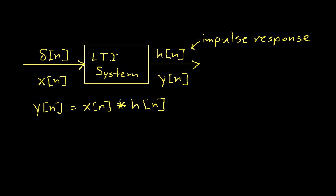By the end of this video, we'll go through an example and you'll have a better understanding of what this convolution operator is. This is an important thing to understand because it says: if I have a linear time invariant system, I can figure out its response to any input as long as I know its impulse response.